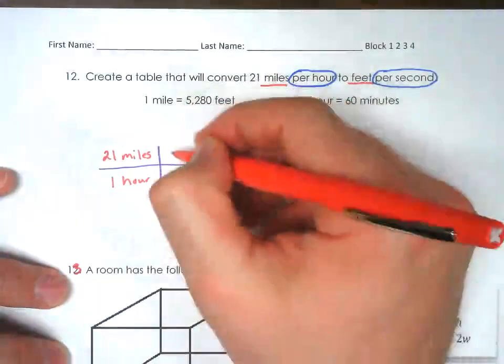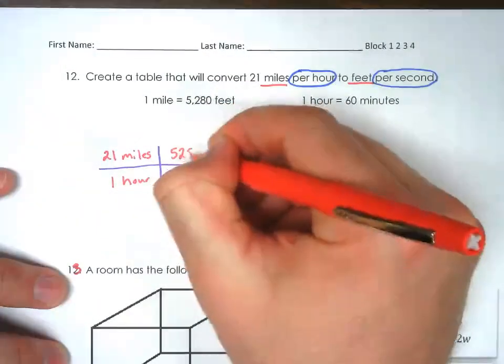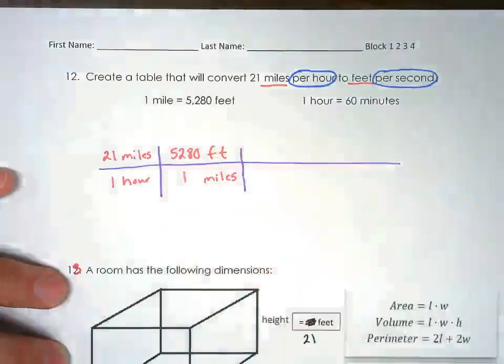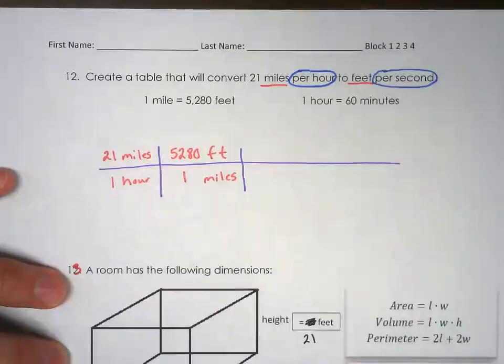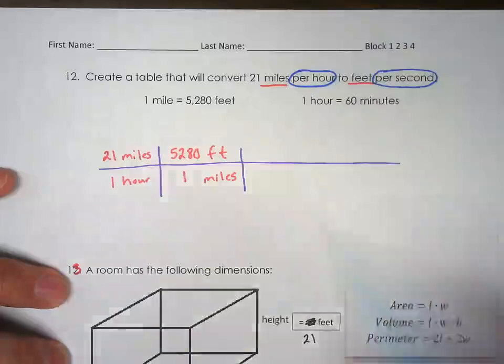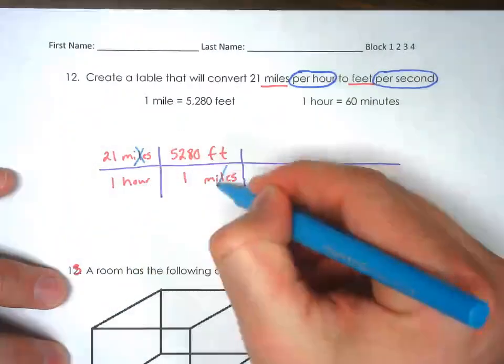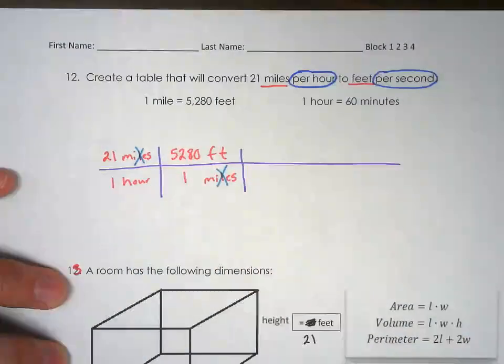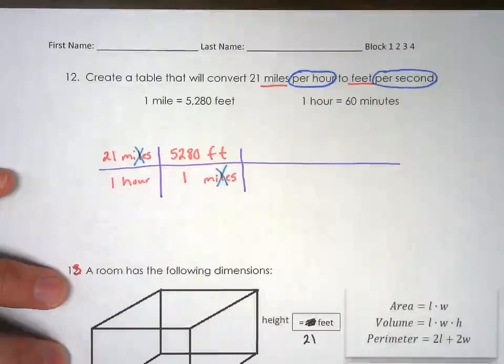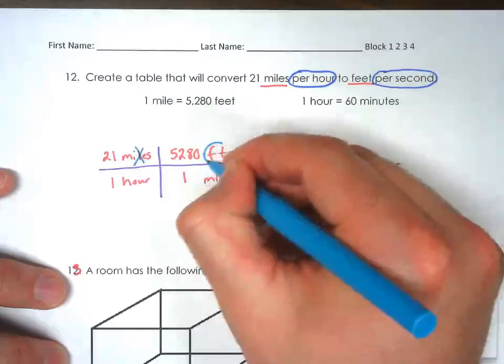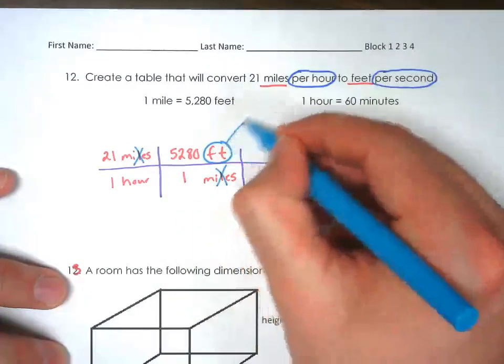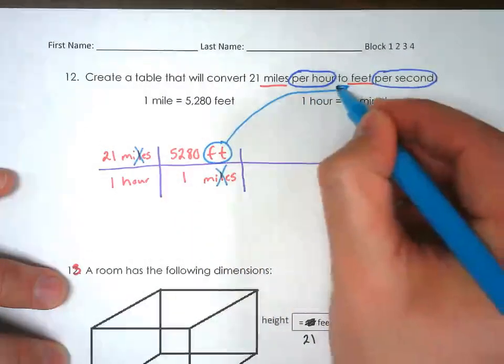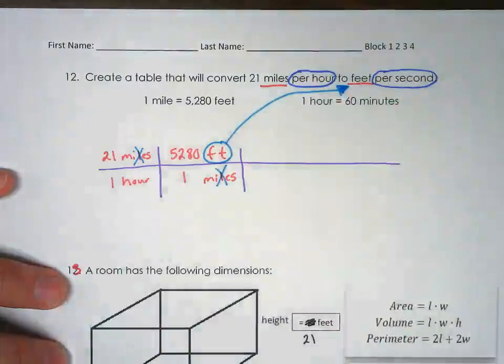How many feet are in a mile? 5,280 feet are in one mile. So some things are going to cross out here. Our miles will cross out. Look what I'm left with: feet. That's exactly what we wanted. Perfect, you're doing the right thing.